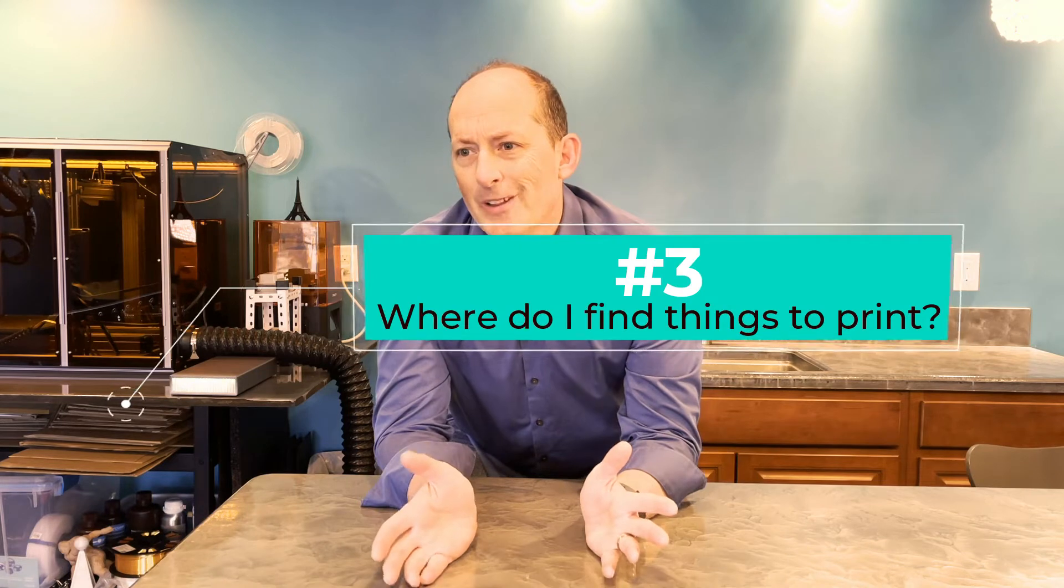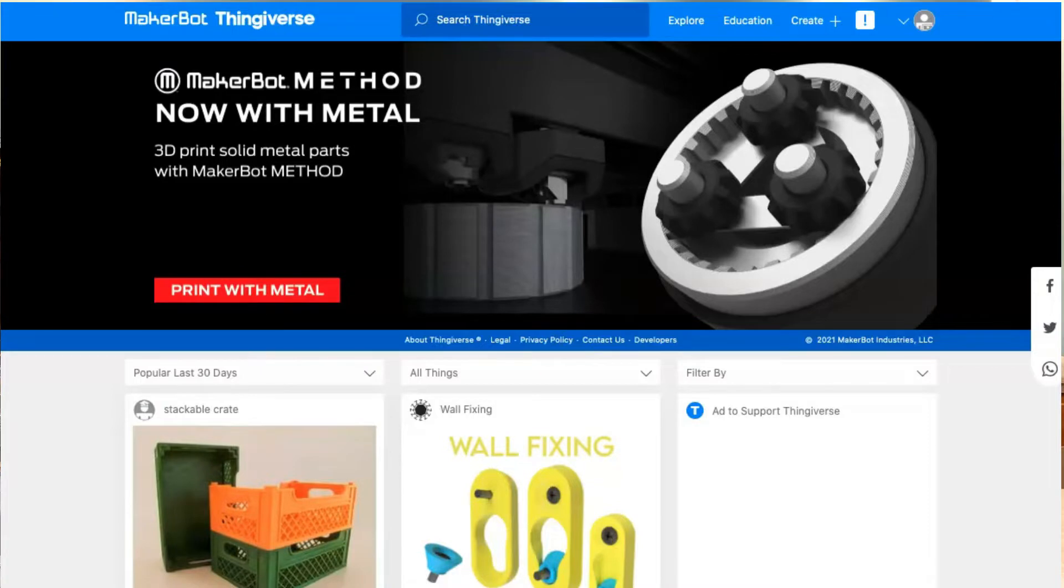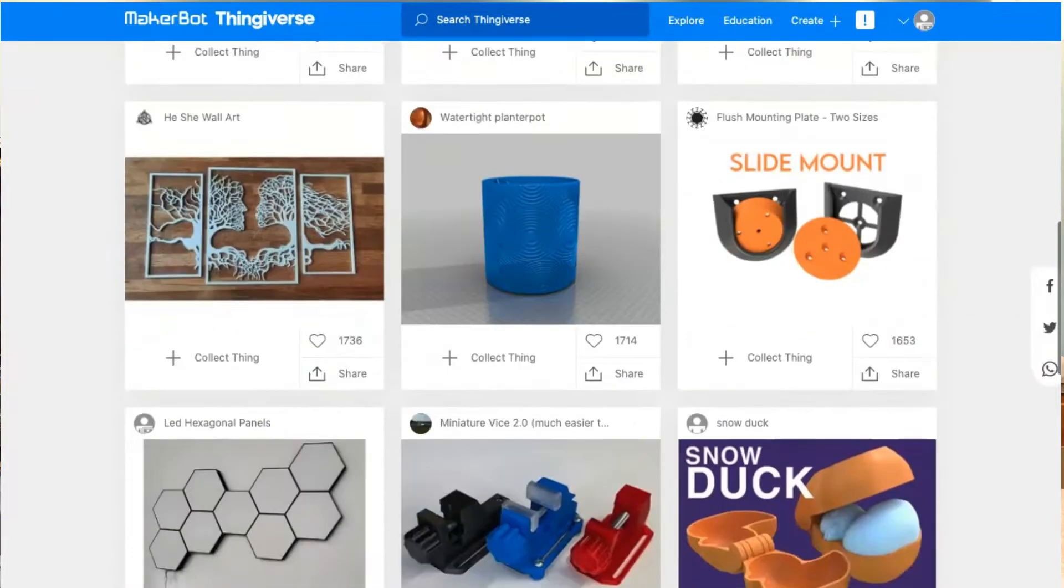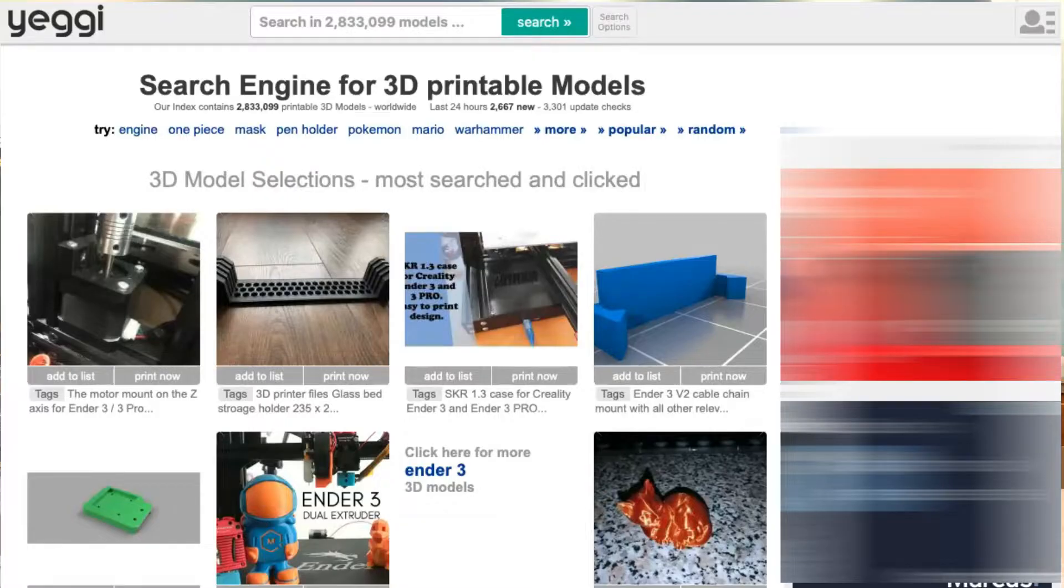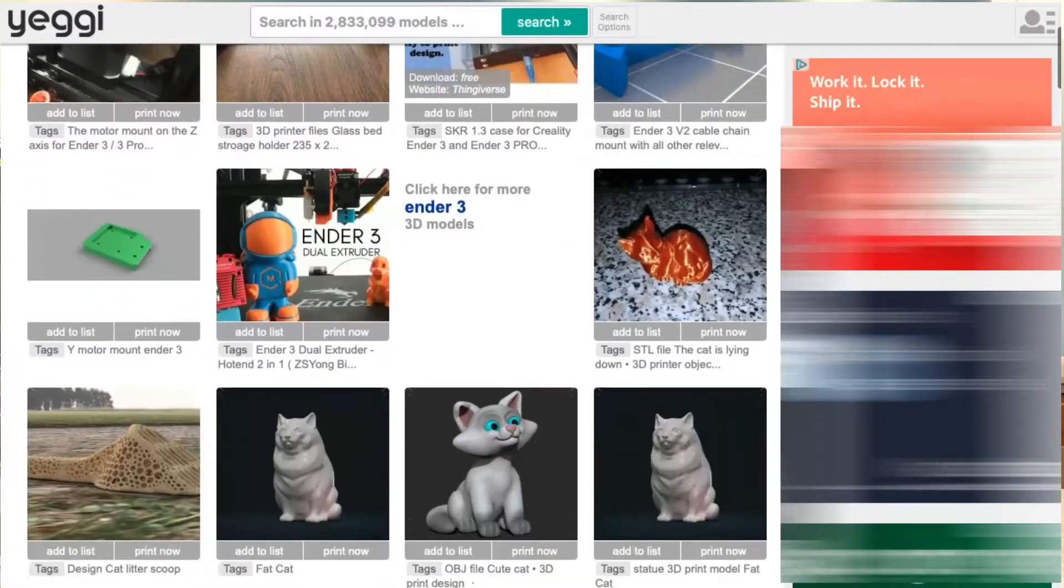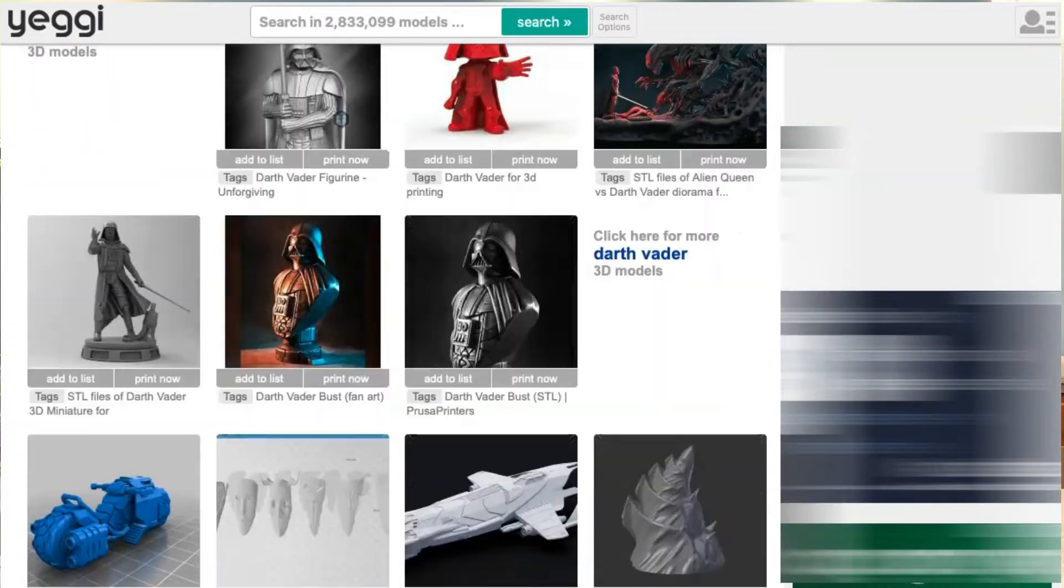You might be asking yourself, well how do I find things to print? If you already own a printer I'm pretty certain that you've already heard of Thingiverse or Yeggi. If you're new to 3D printing and just waiting for your printer to arrive or just starting into it, be familiar with Yeggi and Thingiverse. And those are just a few. I share those two with you because they serve two different purposes.